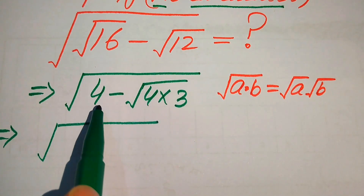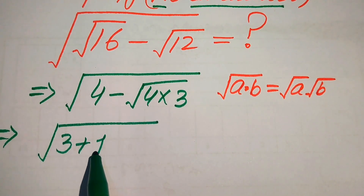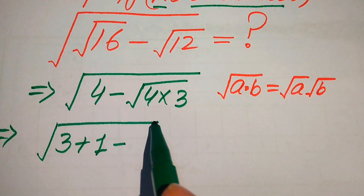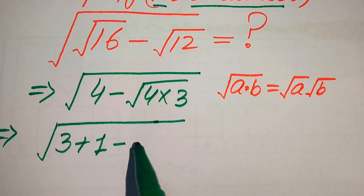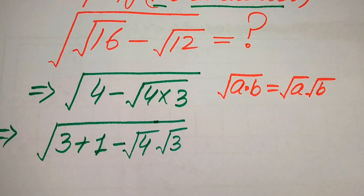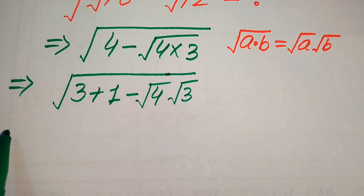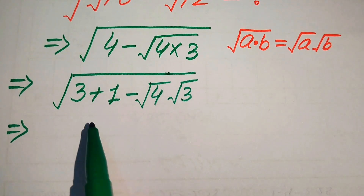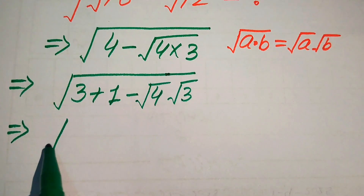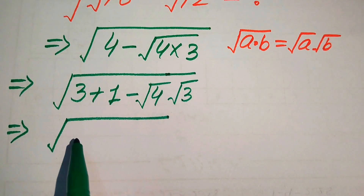According to this radical law, we rewrite the expression. We have 4, which we break as 3 plus 1. Then we apply the radical law and separate the square root on both values, giving us the square root of 4 times the square root of 3. Now we need to put this into a whole square root form.